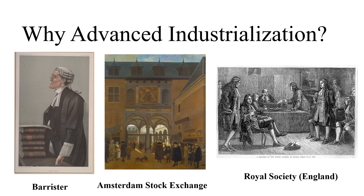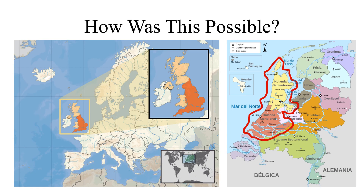Surprisingly, the successes were the pragmatic Dutch province Holland and that always-at-war country England. When a small province has to hold back the sea just to have any land at all, there was a tenacity to succeed. Scientific rationality and property rights became important. With no large central government, raising funds required capital market innovations, including the joint stock company.